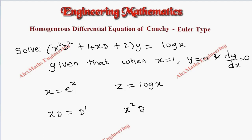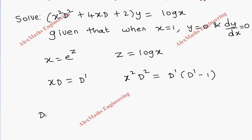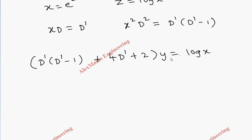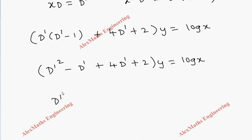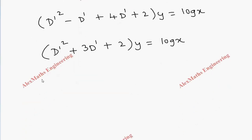We have the result where x·D is D dash, and x squared·D squared is D dash into (D dash minus 1). Substituting this, the first term becomes D dash(D dash minus 1) plus 4·D dash plus 2, into y equal to log x. This simplifies to D dash squared minus D dash plus 4·D dash plus 2 into y equal to log x, and combining terms we get D dash squared plus 3·D dash minus 2 into y equal to log x.